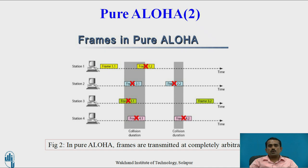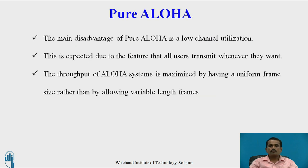The frames in green color identify the collision part. The ending of the first frame and the starting of the second frame can collide. Station one is transmitting two frames — the first frame does not collide, but the second frame collides with the first frame of station two. The main advantage of Pure Aloha is low channel utilization, expected because all stations transmit whenever they want. The throughput of the Aloha system is maximized by having a uniform frame size rather than allowing variable lengths.